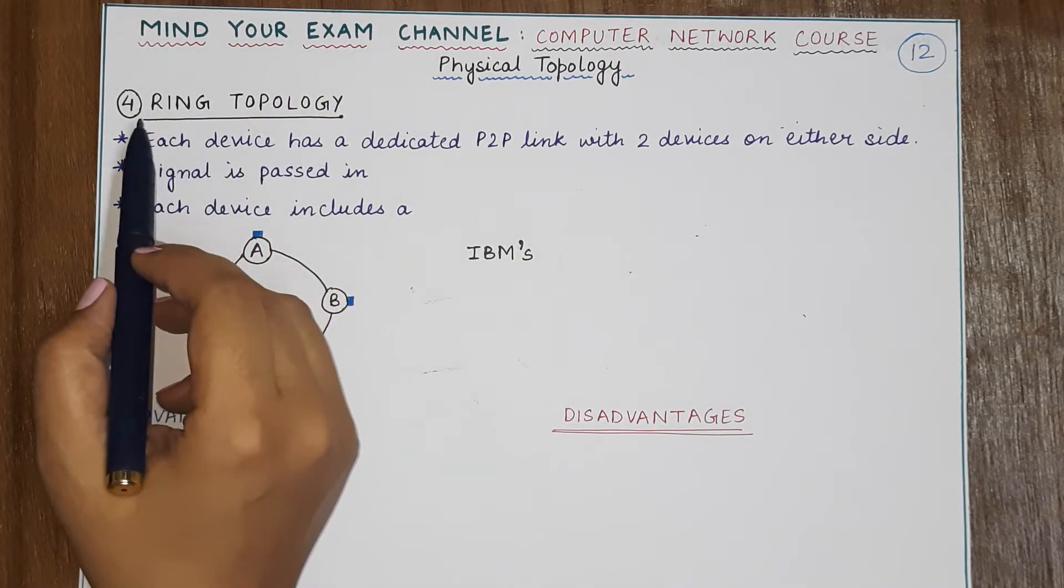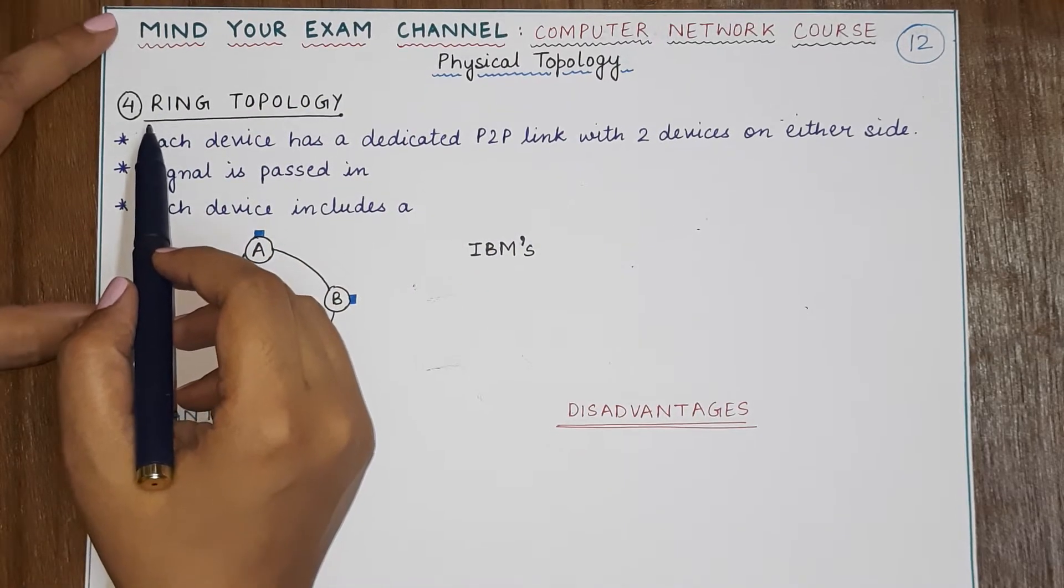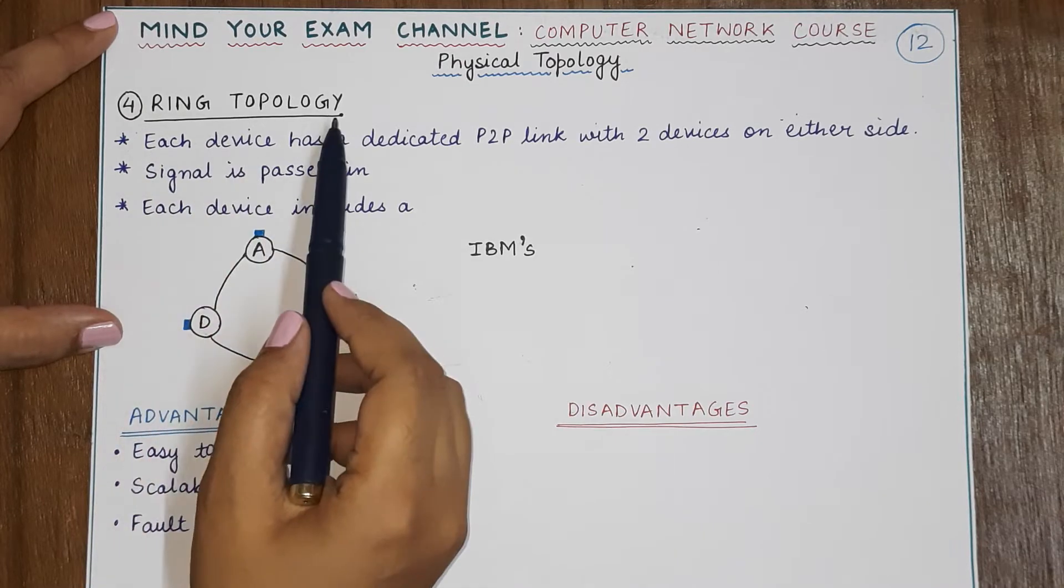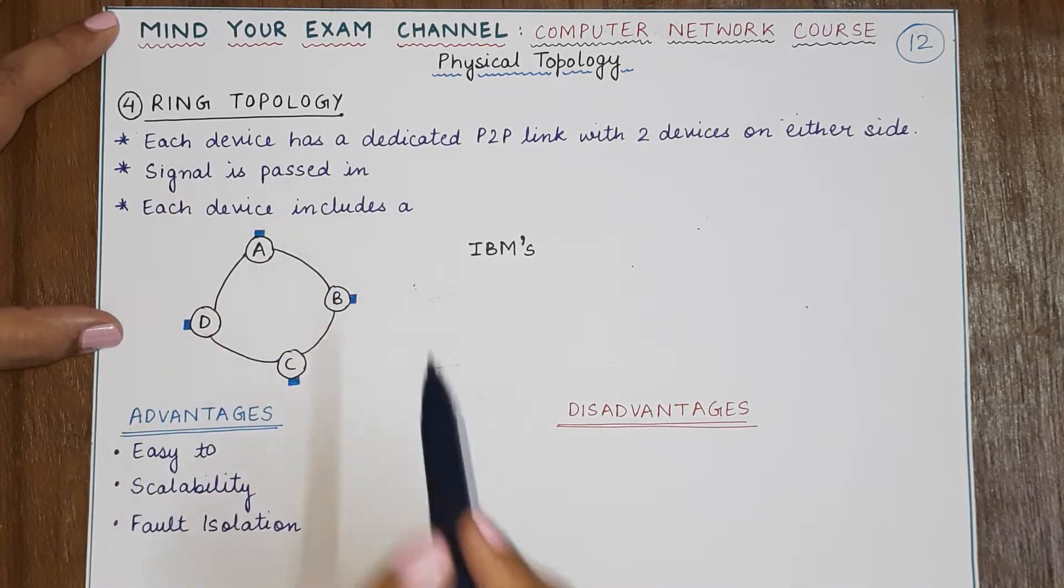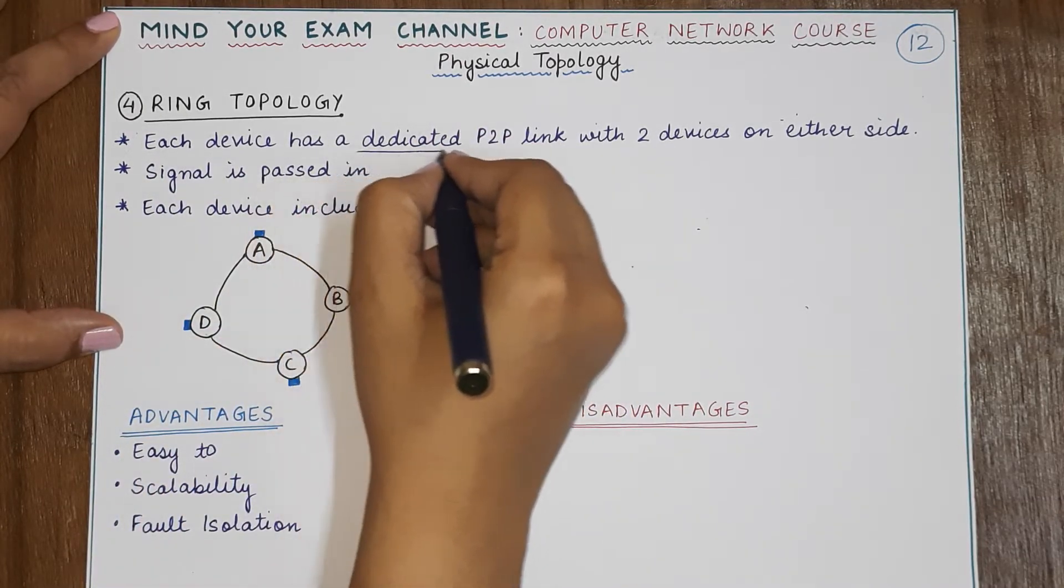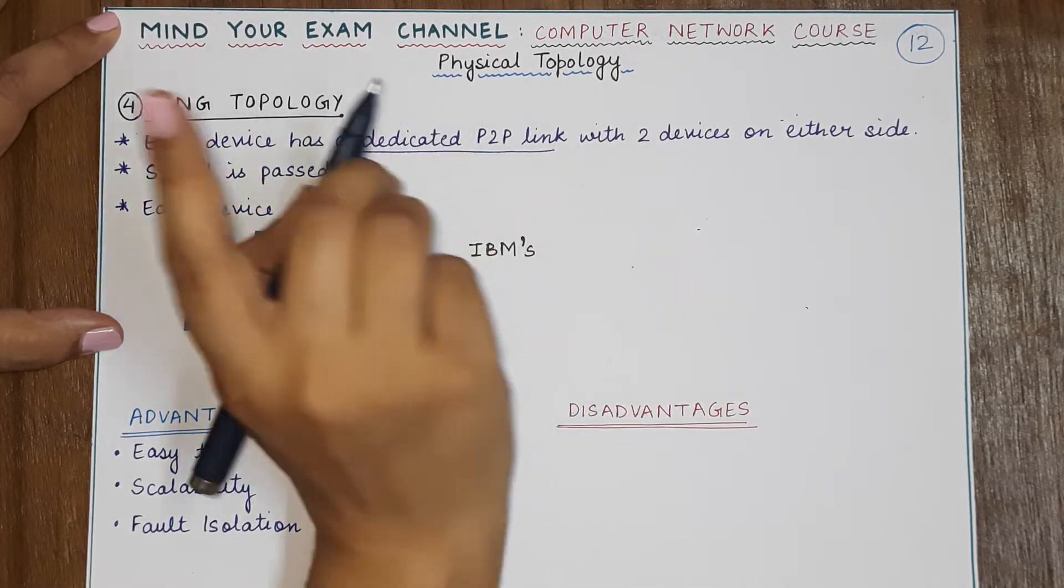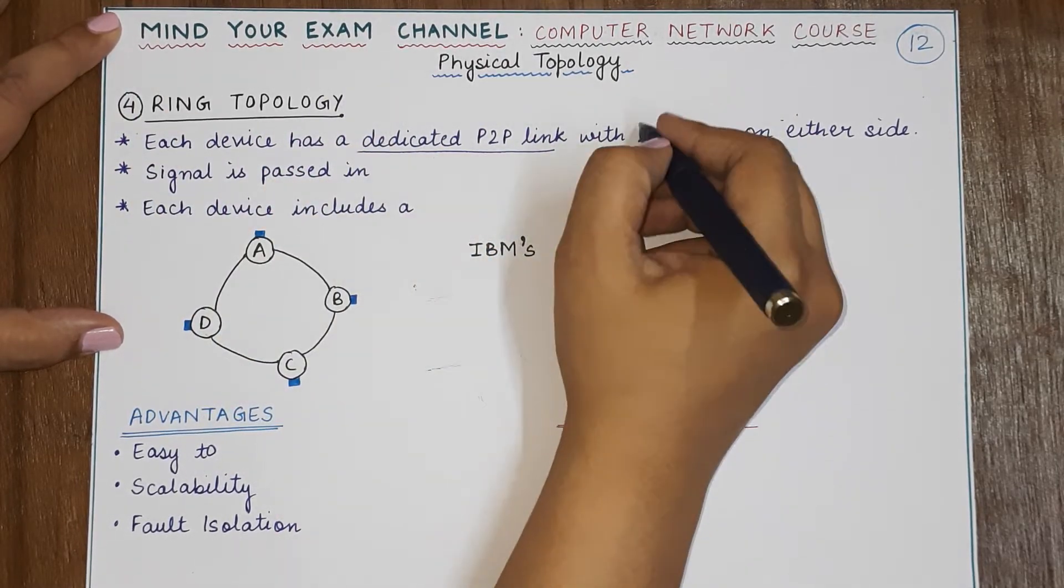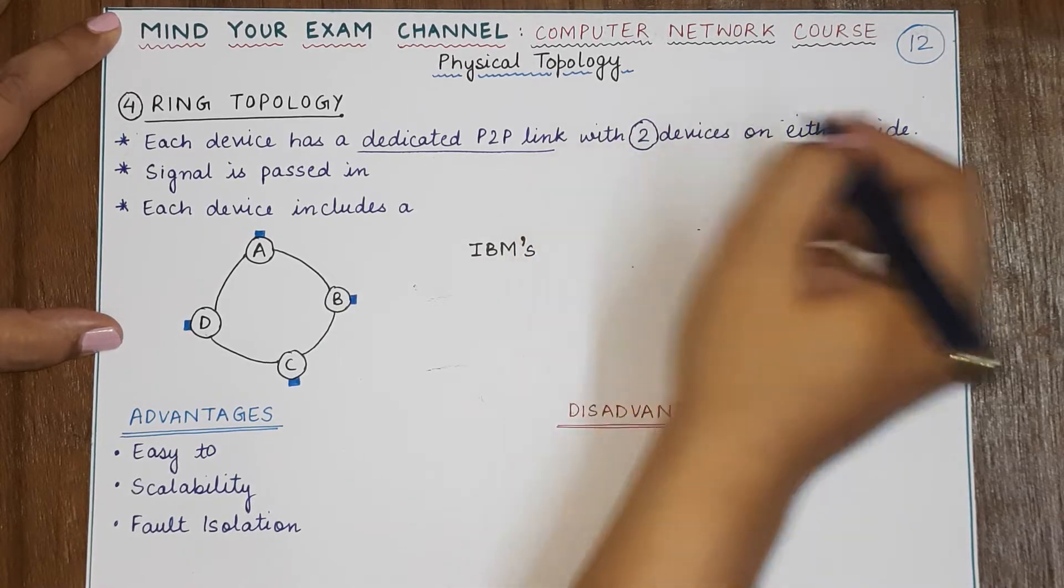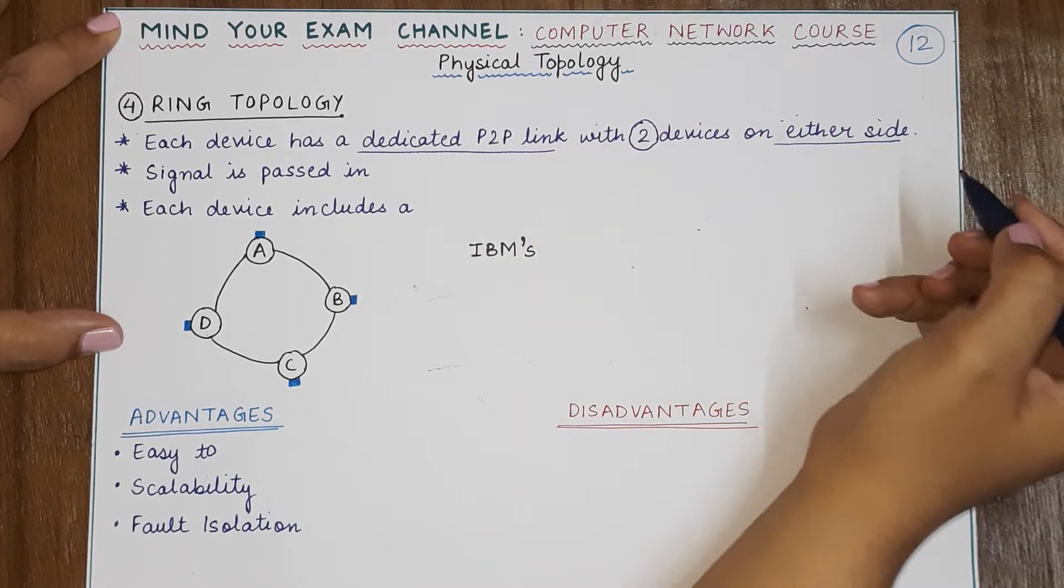Now this is the fourth kind of topology, that is the ring topology. In the ring topology, every device will have a dedicated point-to-point link, but not to all the other devices—only the two devices that are present on either side of it.